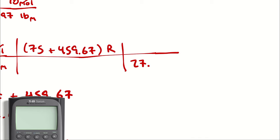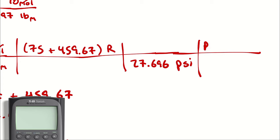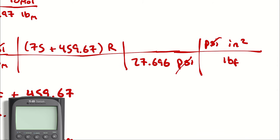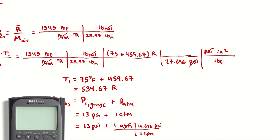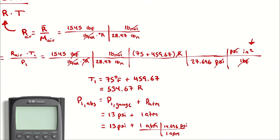So far, pound-force cancels pound-force, rankine cancels rankine, and I have square inches in the numerator. I appear to be missing a dimension — I should have one more unit of length. I'm going to double-check that I grabbed the universal gas constant in the correct units. That would be the foot dimension I missed, so I will go back and add that in.